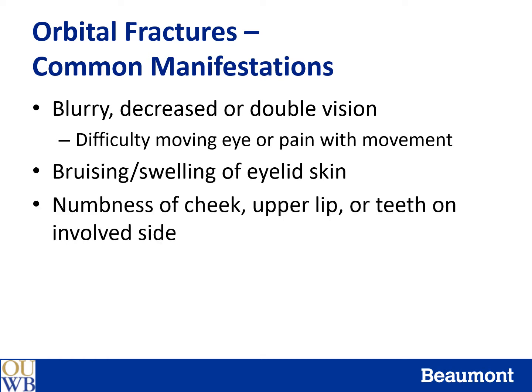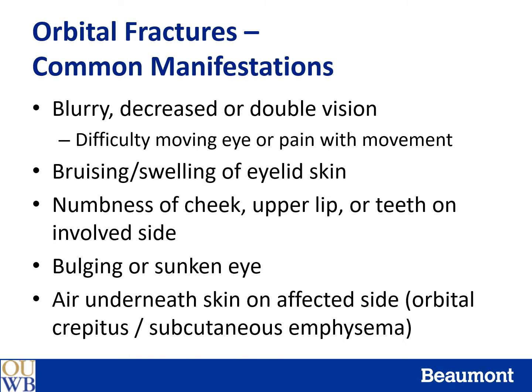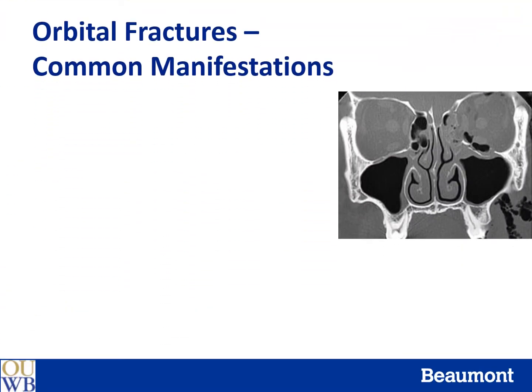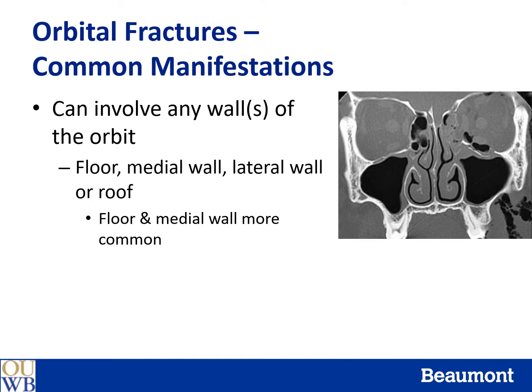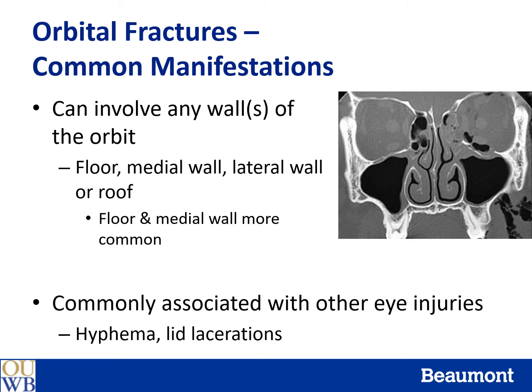The patient may note numbness of the cheek, upper lip, or teeth on the involved side. This can occur if there is injury to the infraorbital nerve from a floor fracture. There may be bulging or sinking of the eye, depending on the size of the fracture and whether there is blood or air behind the eye. There may even be air underneath the skin on the affected side, something called orbital crepitus or subcutaneous emphysema. Fractures of the orbit can involve any of the four walls or a combination, but fractures of the floor and medial walls are the most common. Orbital fractures are also associated with other eye injuries including hyphema and lid lacerations, so a full examination to rule out concurrent eye injuries should be done.